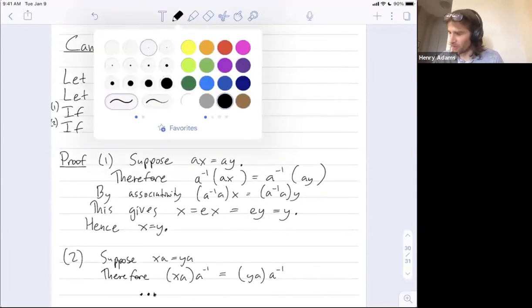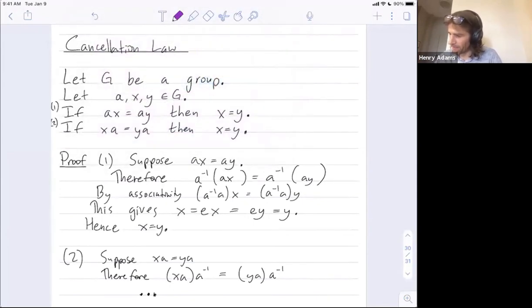Let me wrap up with some comments. Additive notation. We'll take this and it would be a plus x equals a plus y. So if our group were in additive notation, that's how we would write that. And so the cancellation law would say, if a plus x is equal to a plus y, then x equals y.